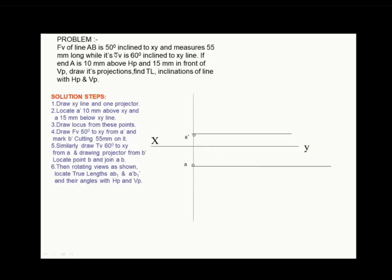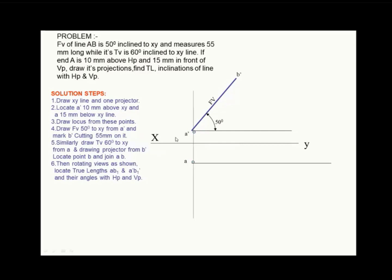The front view of line AB is 50 degrees inclined to XY. The inclination of the front view has been given as 50 degrees and the length is 55 mm. Mark 50 degrees and draw a line through point A dash, then mark 55 mm as the length of the front view. The top view is at 60 degrees with respect to XY, so mark 60 degrees from the horizontal and draw a line at that angle. Draw a vertical line through point B dash — wherever it intersects the top view gives point B.